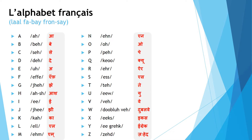The sounds are different in some cases, so let's start: a, b, c, d, e, f, g, h, i, j, k, l, m, n, o, p, q, r, s, t, u, v, w, x, y, z. So that's all about French alphabets.